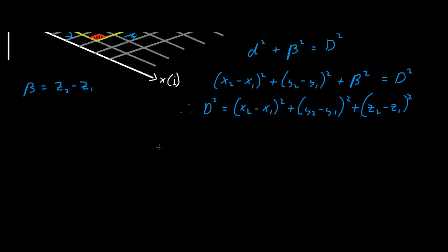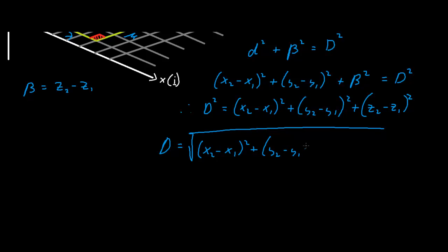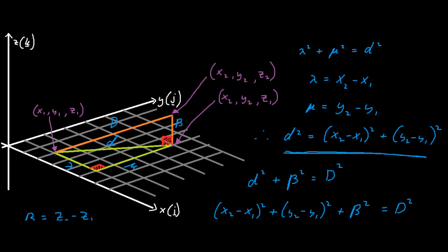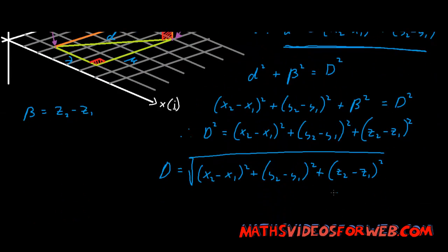And if we rearrange this equation, we get D equals the square root of (x2 minus x1) squared plus (y2 minus y1) squared plus (z2 minus z1) squared. This is the distance formula you can use in three dimensions to find the distance from x1, y1, z1 to x2, y2, z2.